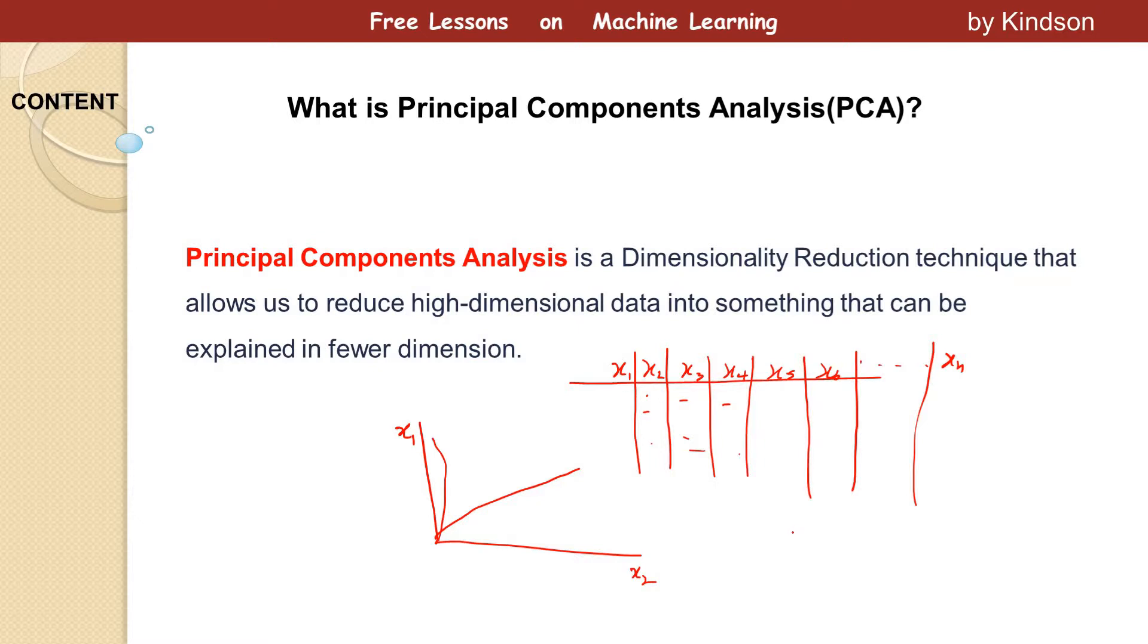So basically you'll be plotting x choose 2. What it means if you are plotting one against the other, taking two features and plotting, you have this number of plots and that would be something like x into x minus one. I can't remember yet. So which will give you something really large.